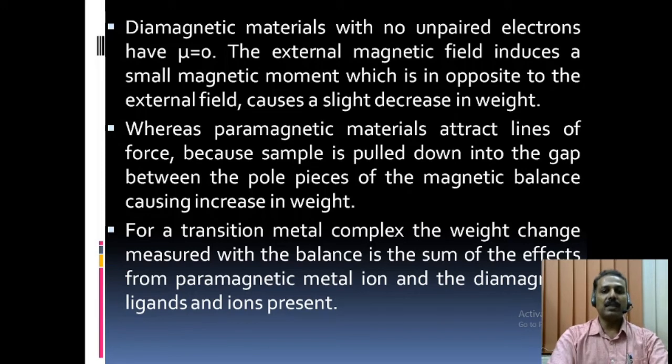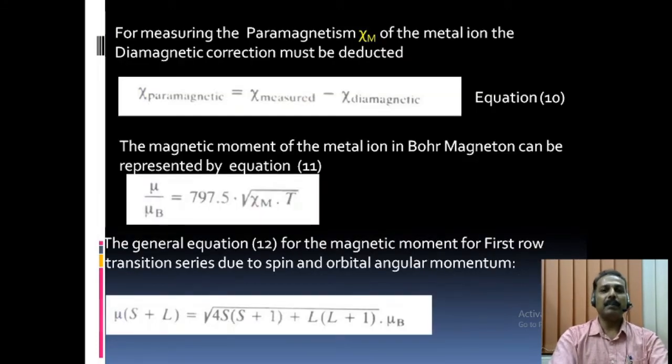For a transition metal complex, the weight change measured with the balance is the sum of the effects from paramagnetic metal ion and the diamagnetic ligands and the ions present. For measuring paramagnetism of the metal ion, the diamagnetic correction must be detected. That is, chi paramagnetic is equal to chi measured minus chi diamagnetic.